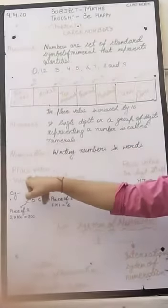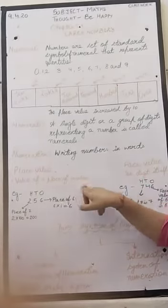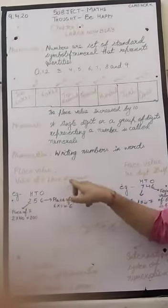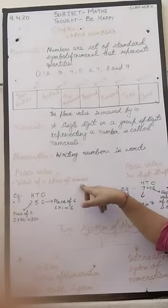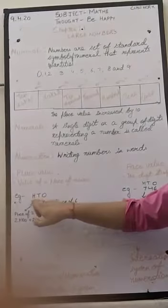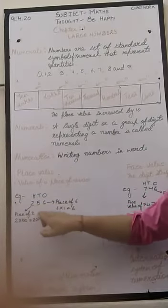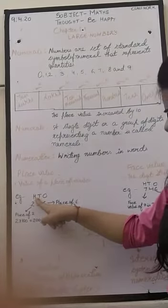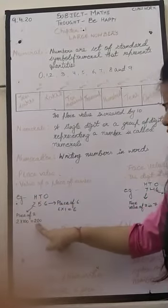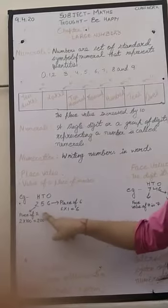What is place value? Place value means the value of a place of a number. That means the number where which it is standing is the place of that number. For example, 256. The place value of 2. The 2 is standing on 100's place. So 2 multiplied 100 is equal to 200. The value of 2 is 200.